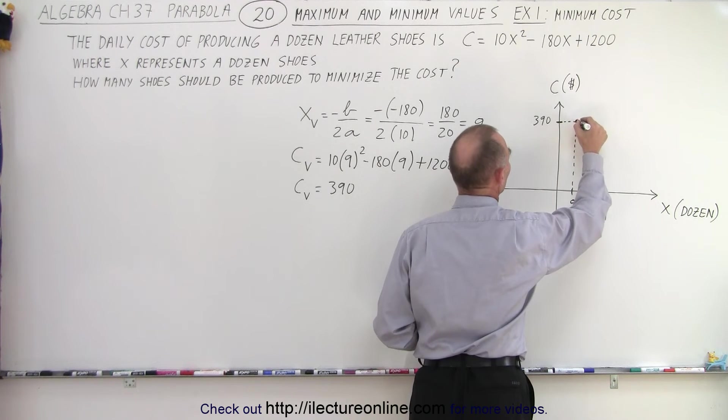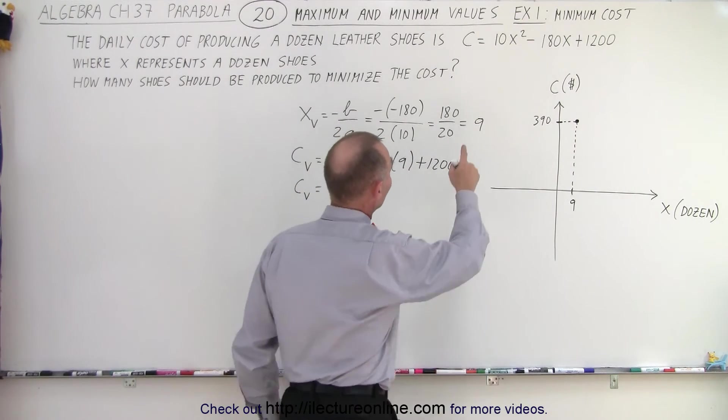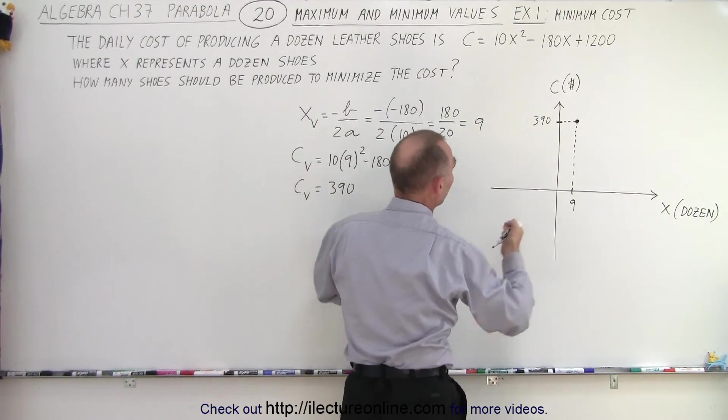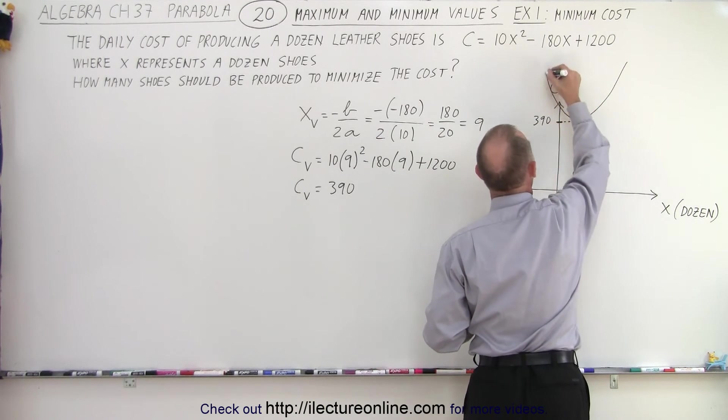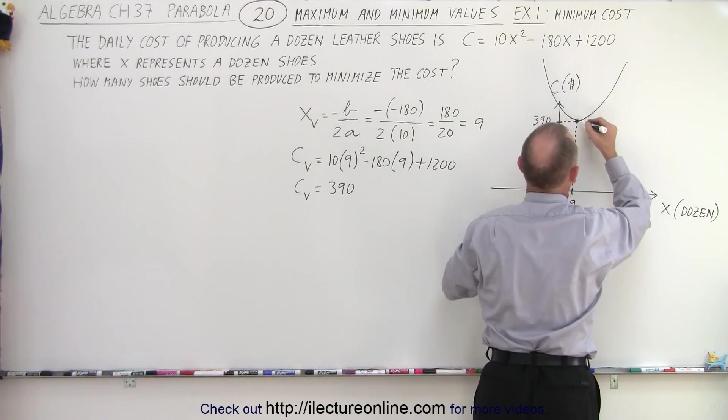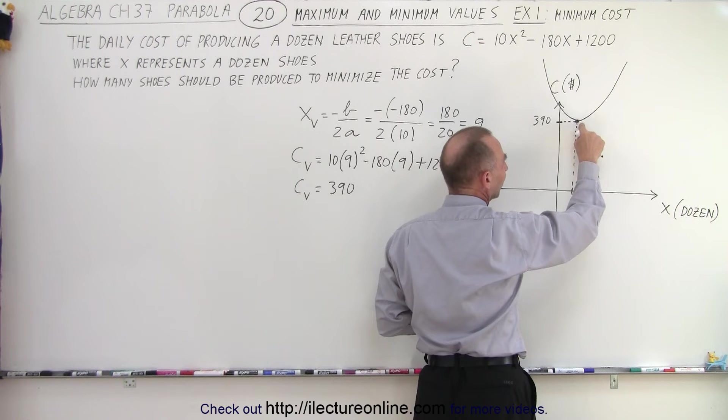That's where the vertex would be. Now, what does this graph look like? Well, it turns out, since a is a positive number, it opens upward. That means that the vertex will look like this. I mean, the graph will look like this, starting from the vertex. And notice that this is the lowest cost on the function.